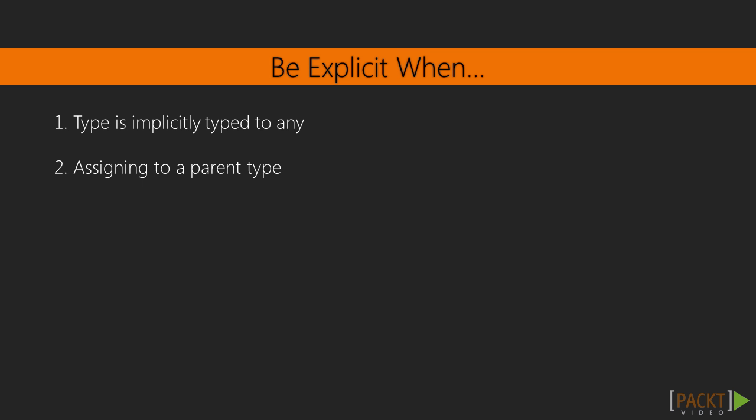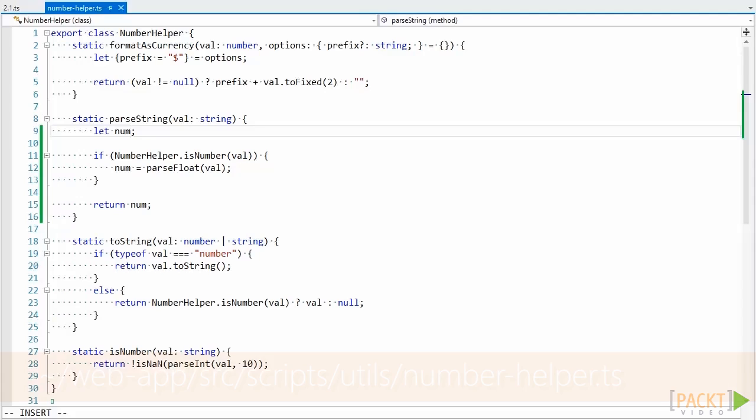Now when should we be explicit? Here are some good rules to follow. One: be explicit when the type will be implicitly typed to any. And two: be explicit when assigning to a parent type. Otherwise, write descriptive code to eliminate the need to be explicit when the type could be implicit. Let's look at these two cases.